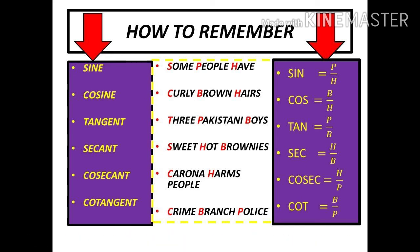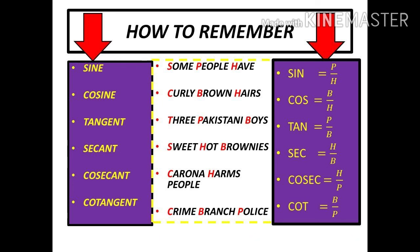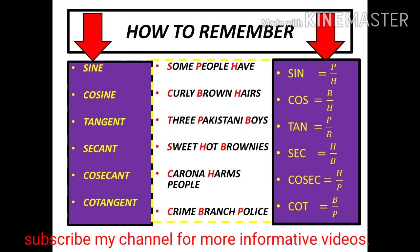The last one is cotangent, or cot. Cot is equal to "Crime Branch Police". C is for cot, B is for base, and P is for perpendicular. So cot equals base upon perpendicular.